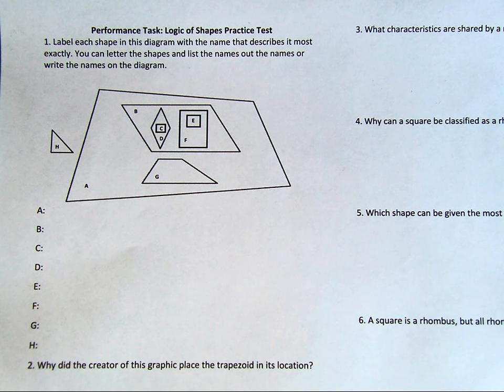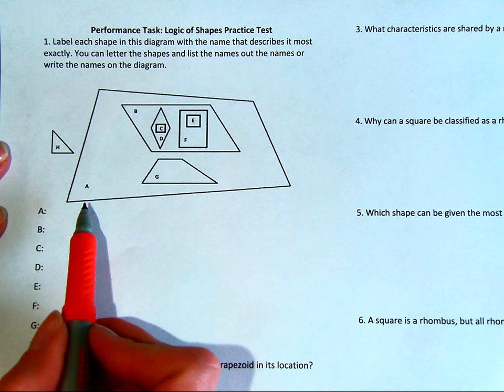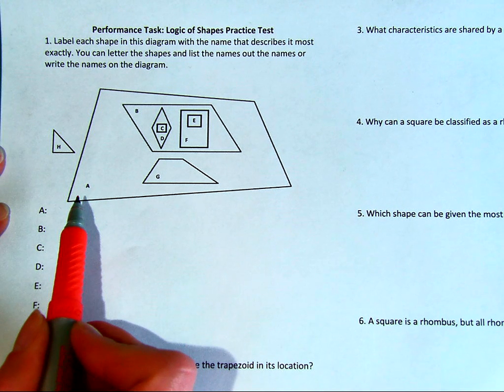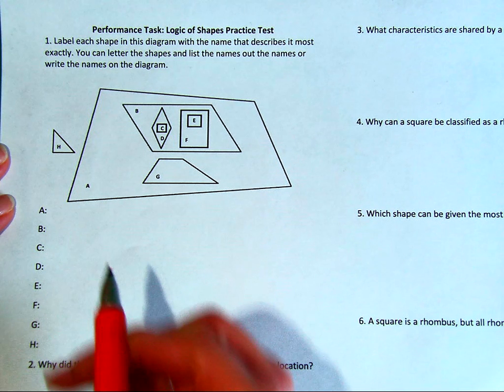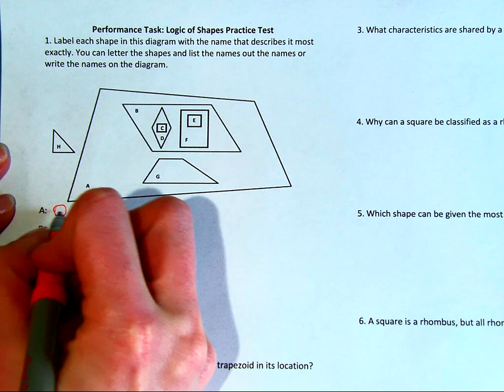None of the sides of figure A have parallel lines, and none of the sides are equal. So this is simply just a quadrilateral.